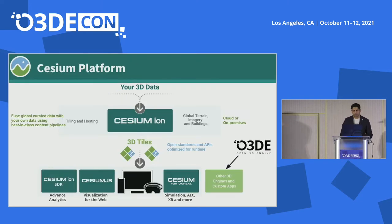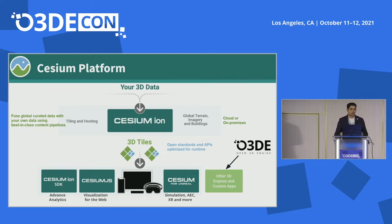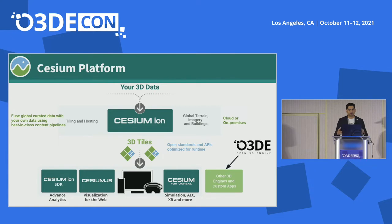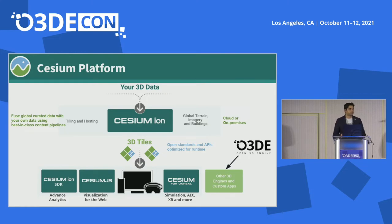Here's a high-level overview of the Cesium platform. What's at the center of this is 3D Tiles. On the Cesium platform, you're able to take data from a variety of sources and stream those into a variety of game engines that serve your needs. To make this possible, we pioneered a standard called 3D Tiles, which allows you to tile up all of that data and stream it into the game engines.